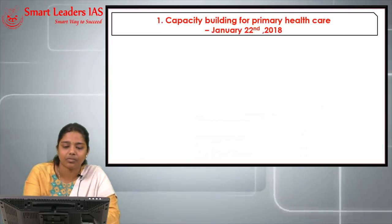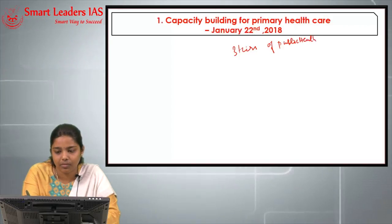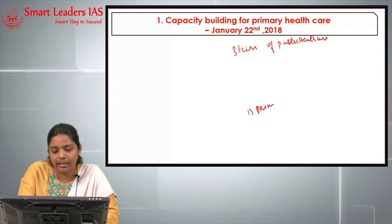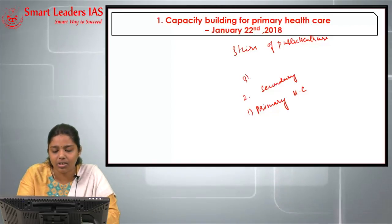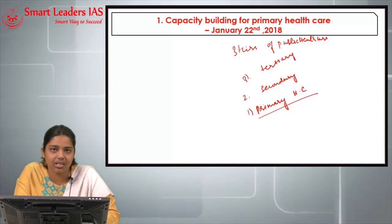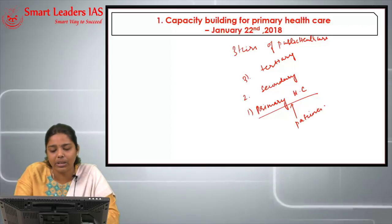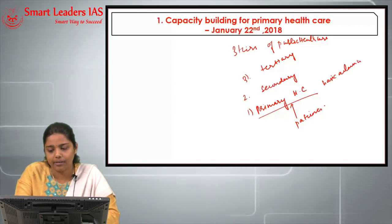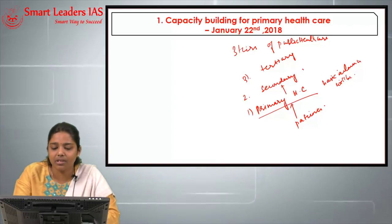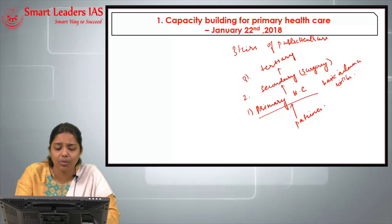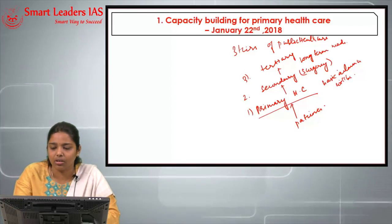The three types of public health care system are: the first one is primary health care center, the second is secondary, and the third is tertiary. The primary health care center is the first point of contact for patients, where basic ailments are treated. Secondary health care centers handle surgery and related procedures, while tertiary care handles long-term medications.